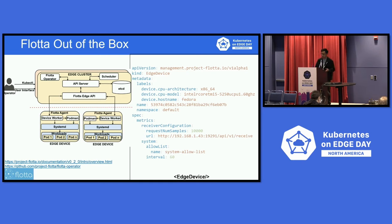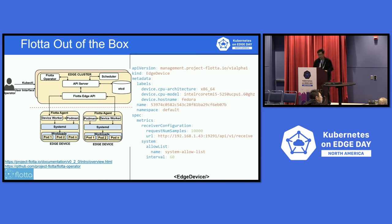Procta manages edge devices from a single point using Kubernetes CRDs to handle all kinds of device configuration. Edge devices can register, pull configuration, and keep syncing data through the Procta Edge API in the edge cluster.